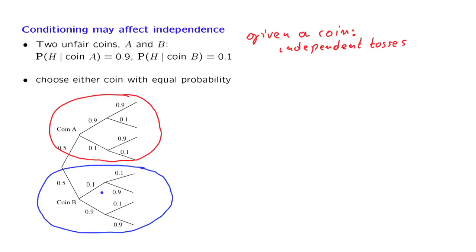Suppose now that we choose one of the two coins. Each coin is chosen with the same probability, 0.5. So we're equally likely to obtain this coin and then start flipping it over and over, or that coin and start flipping it over and over.